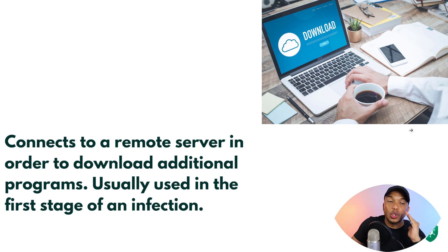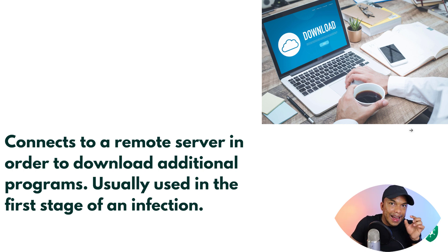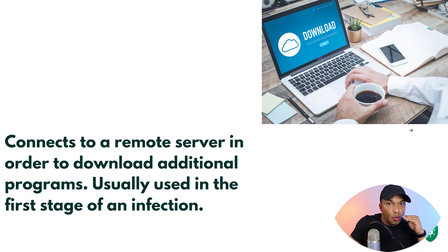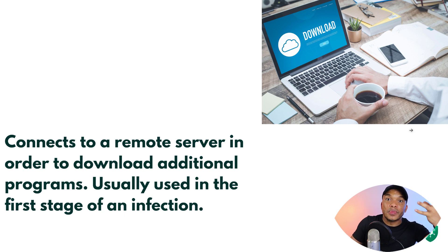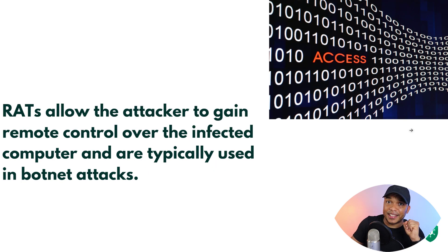Downloader trojans connect to a remote server to download additional programs and are typically used in the first stage of an infection. The reason is that anti-malware can recognize malicious programs, but the downloader trojan is very small in size, giving it a good chance of slipping past anti-malware undetected. Once installed, it becomes active and forcefully downloads the bigger, more malicious files — and may even disable the anti-malware to prevent those larger files from being blocked. That's why they're used in the first stage of infection.